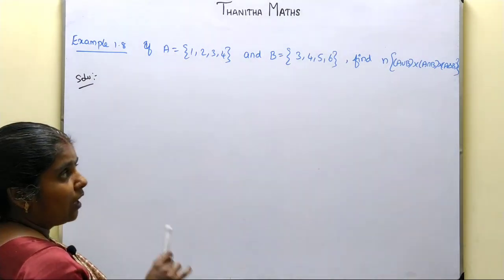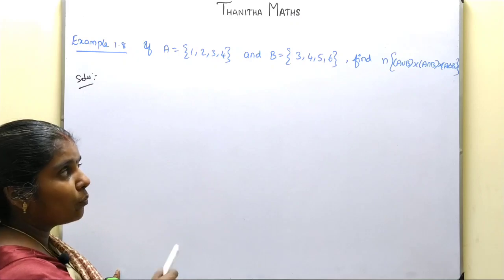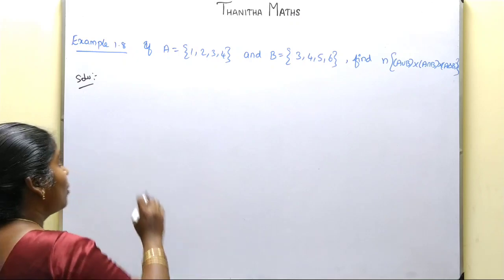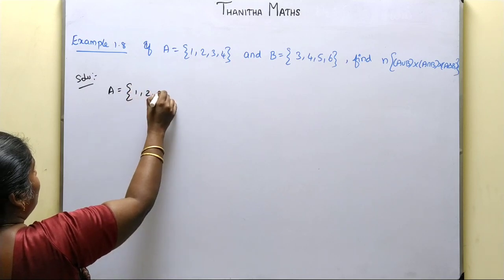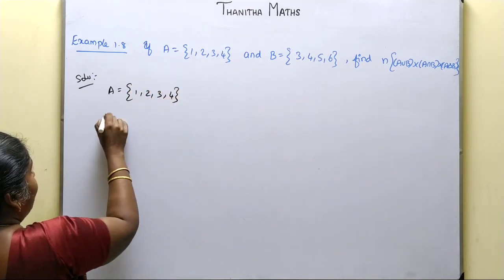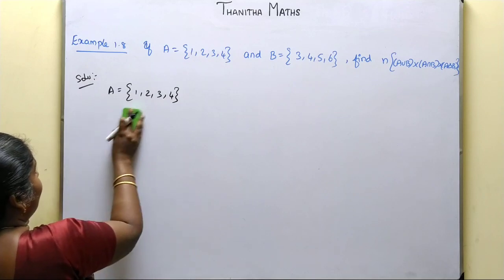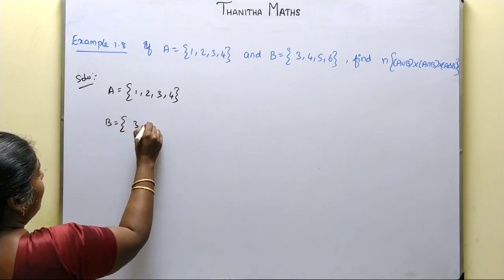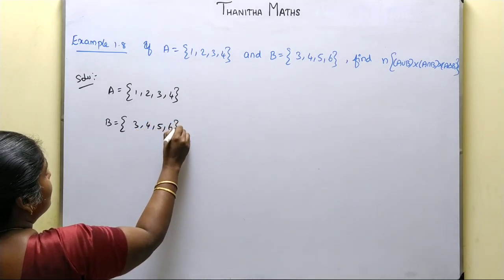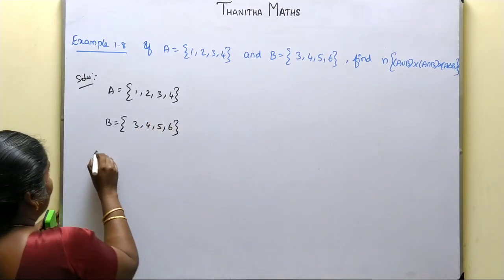A equals {1, 2, 3, 4}, so n(A) = 4. B is the set {3, 4, 5, 6}. First, we have to find A∪B.